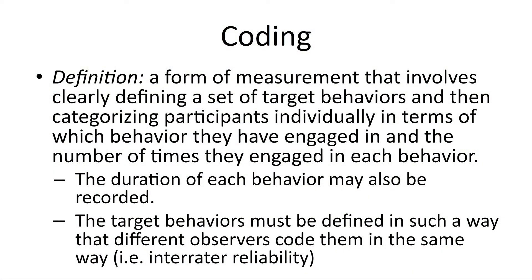It's important to make those decisions before you get started so that you can develop a system called coding. Coding is a form of measurement that involves clearly defining a set of target behaviors and then categorizing participants individually in terms of which behaviors they have engaged in and the number of times they've engaged in each. The target behaviors must be defined so that no matter who does the observations, they will code them in the same way — this is called inter-rater reliability.